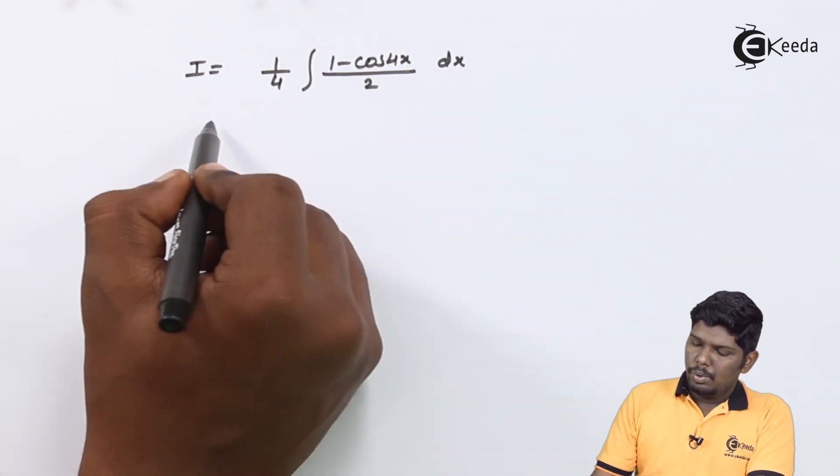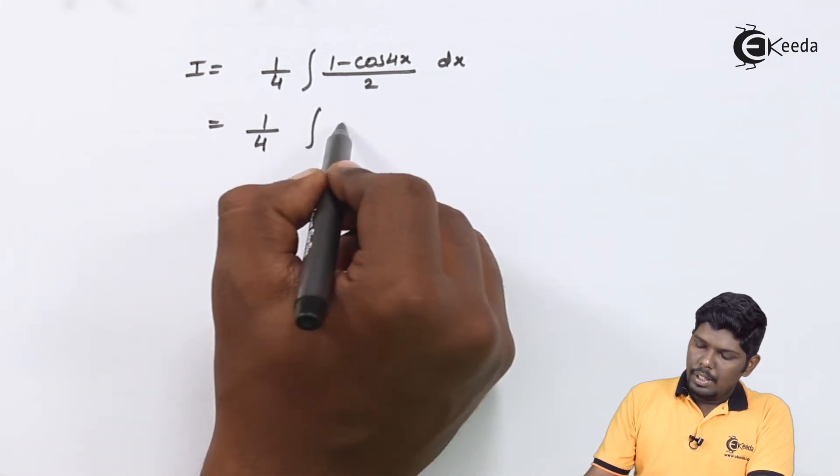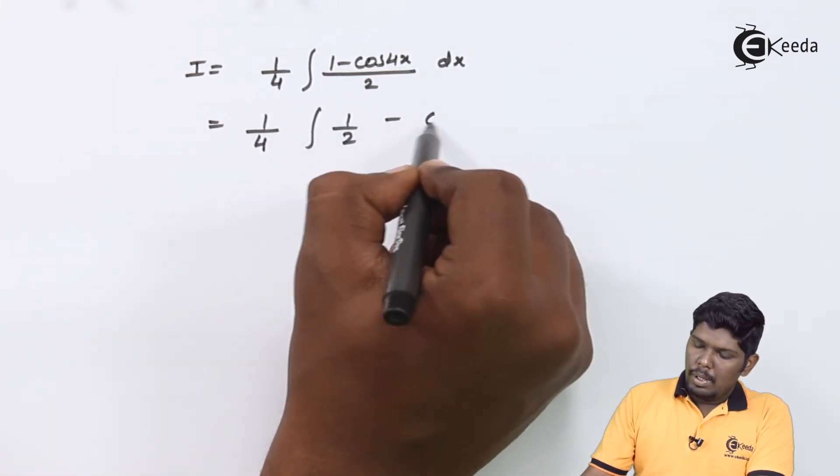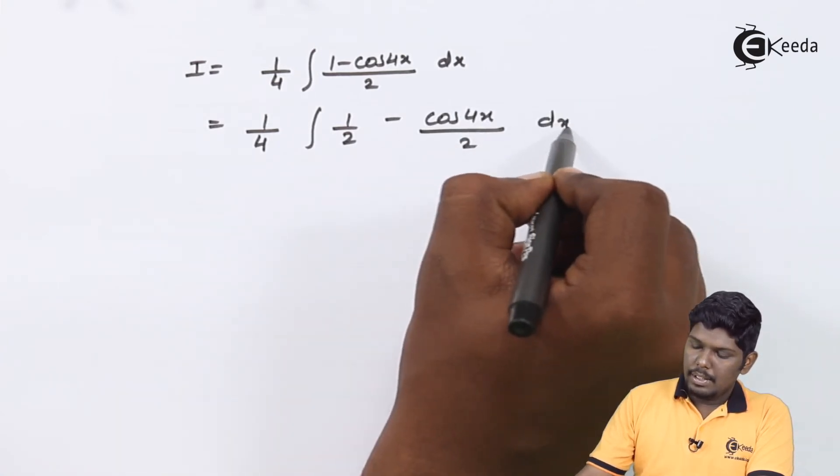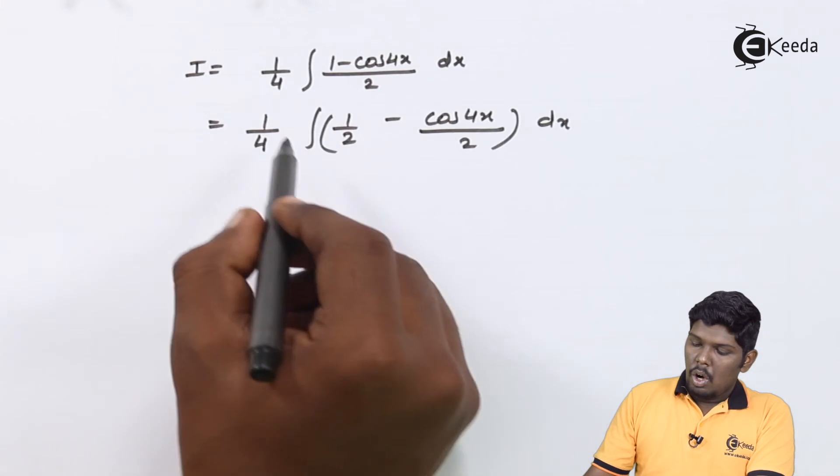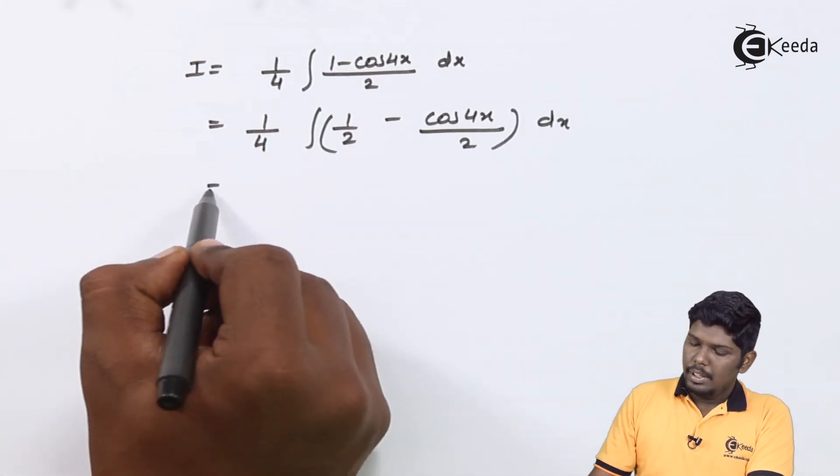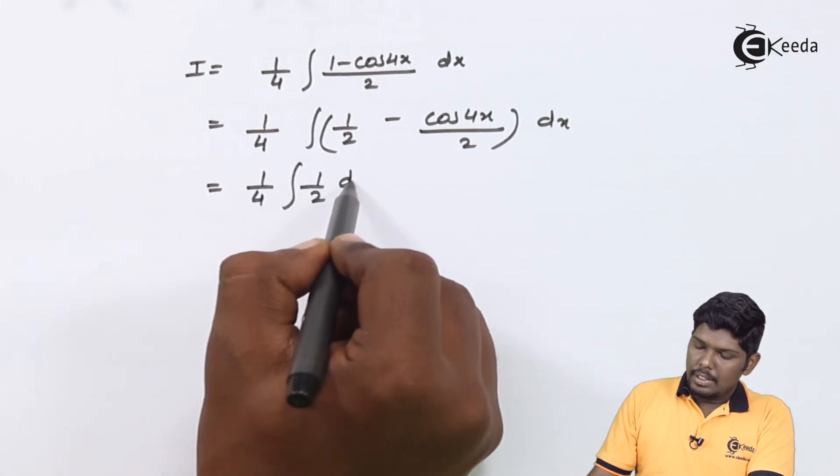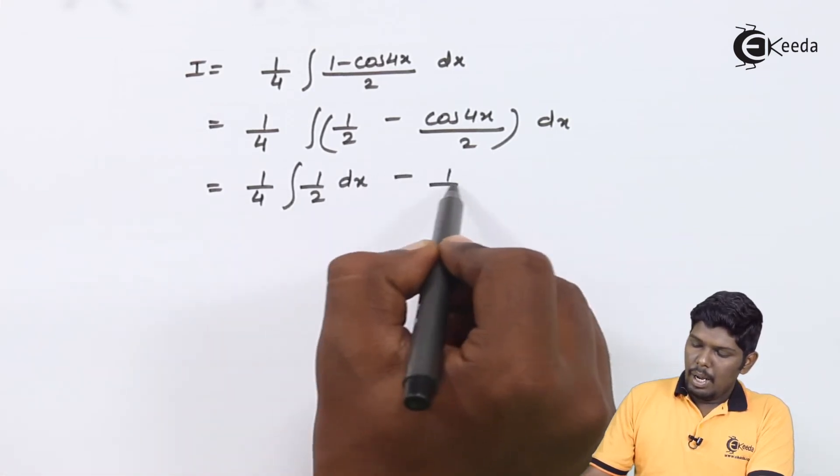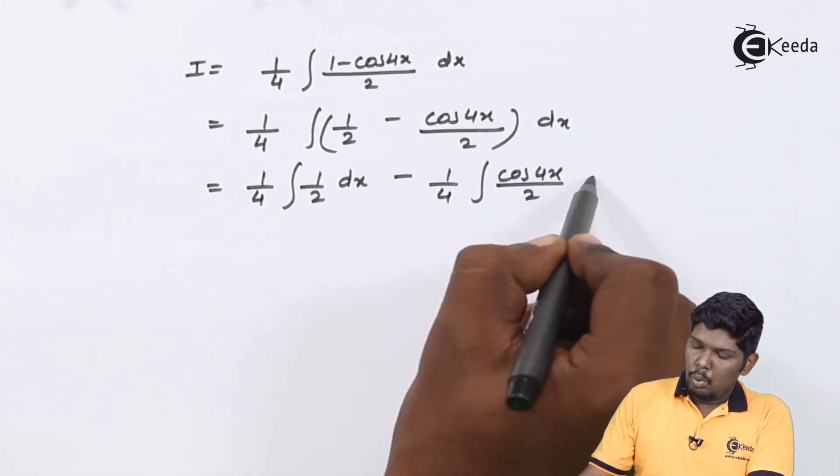On separating 2, we have 1/4 ∫(1/2 - cos 4x/2) dx. On separating integral and also giving 1/4 to both the terms, we have 1/4 ∫1/2 dx - 1/4 ∫(cos 4x)/2 dx.